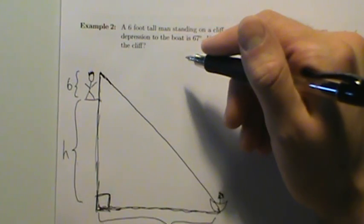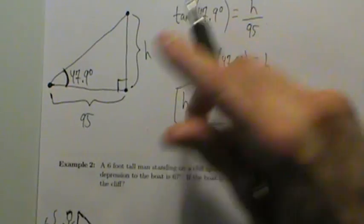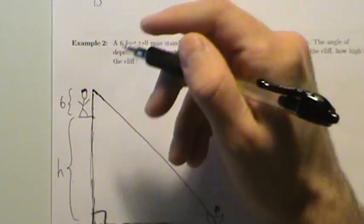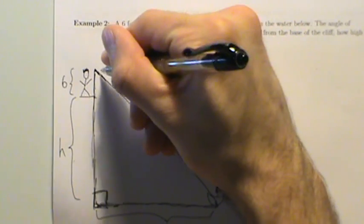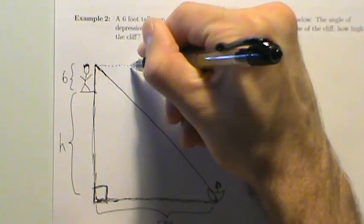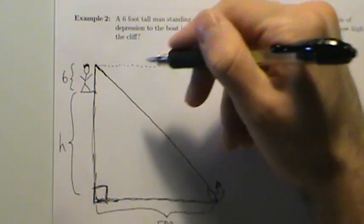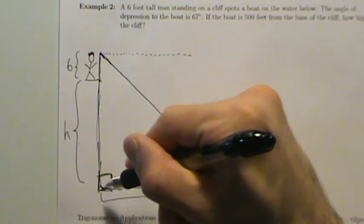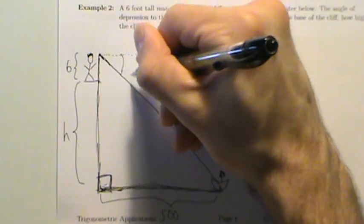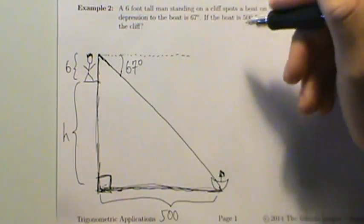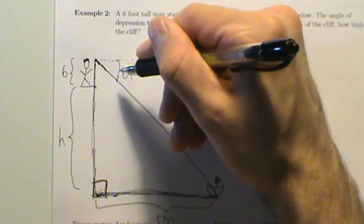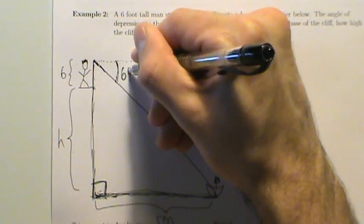What's the angle of depression? We talked about angle of elevation in the previous example — this is the angle of elevation. But the angle of depression: we might think it's this angle inside the triangle, but actually we need to extend a dotted line out here. This dotted line is parallel with the water line, and this right here is actually the angle of depression, which we were given as 67 degrees. So the angle of depression is not inside the triangle — it's outside the triangle, and it's 67 degrees.